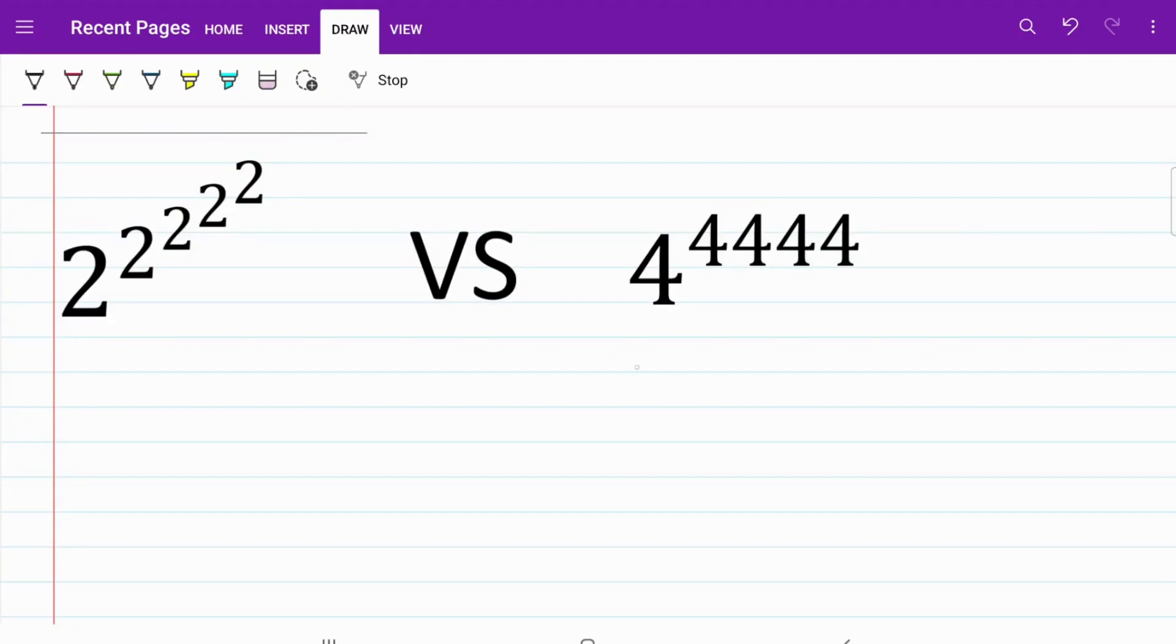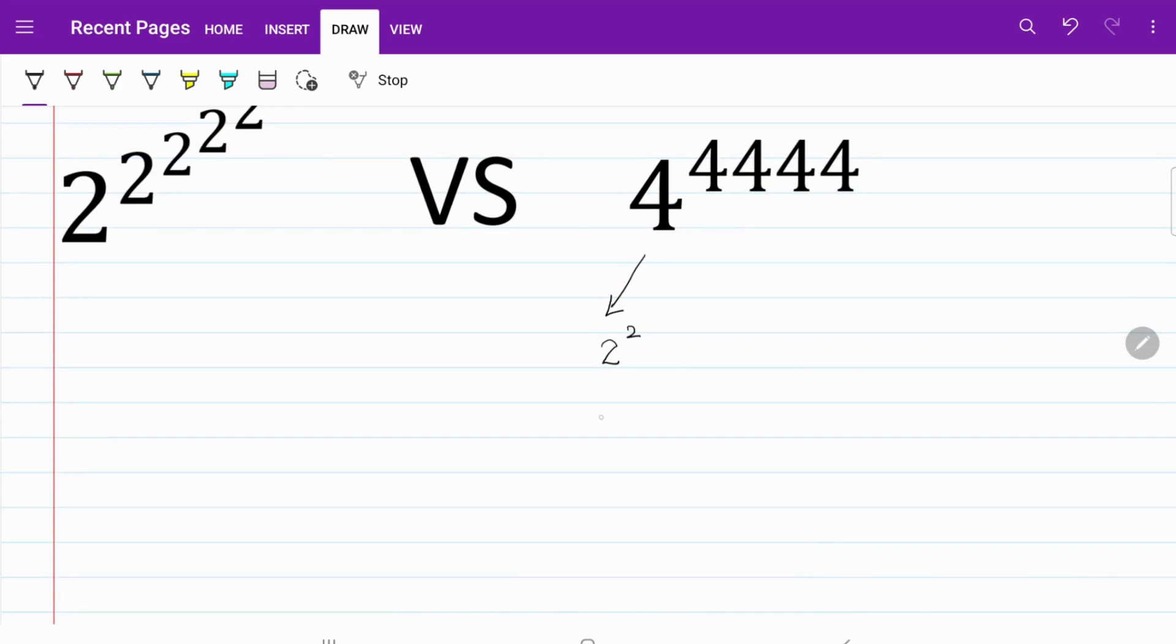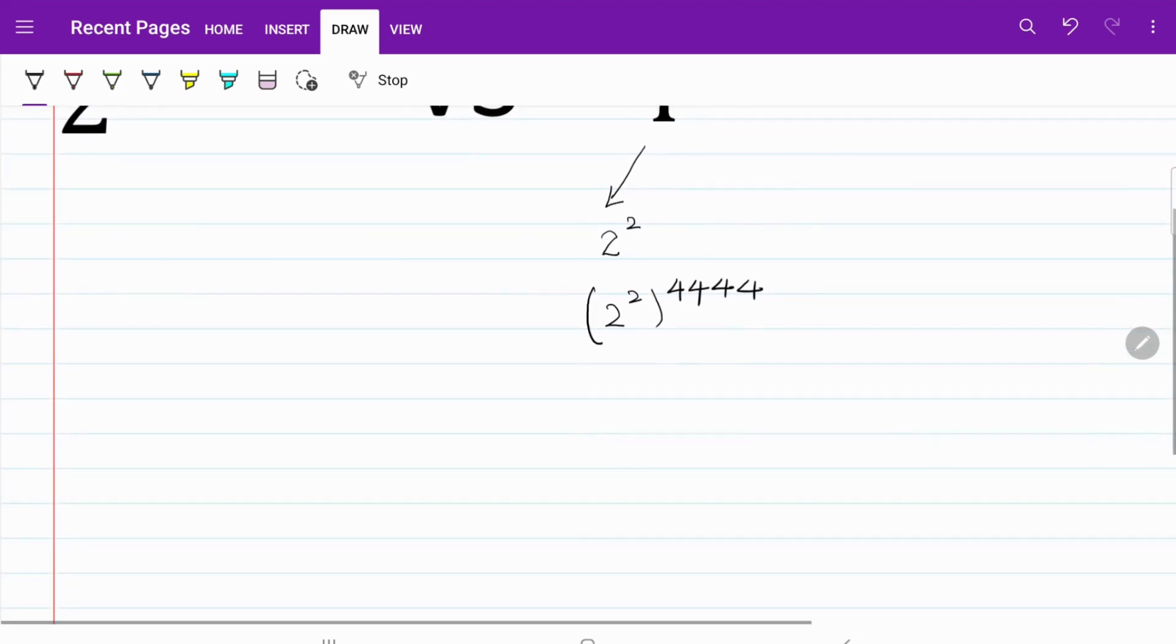So the first thing we are going to do is to look at 4 on the right-hand side and write that as 2 squared. From here, I can express the right-hand side as 2 squared to the power of 4,444. Multiplying the two exponents, I have 2 to the power of 8,888.